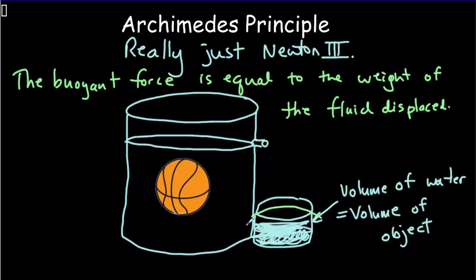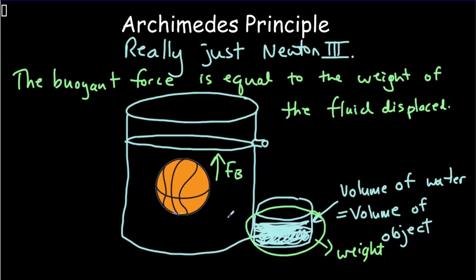Archimedes' principle states that the buoyant force is equal to the weight of the fluid displaced. The object pushes a weight of water out of the way, and the water pushes back with an equal and opposite force — that is the buoyant force. Notice that the buoyant force has nothing to do with the weight of the object itself, but depends only on the volume: the bigger the volume, the more water displaced, and the larger the buoyant force.